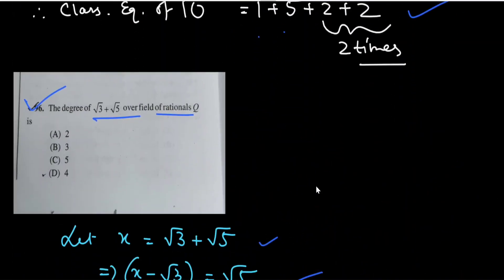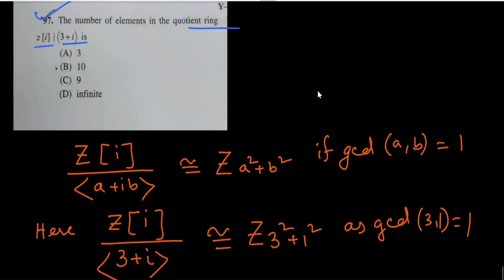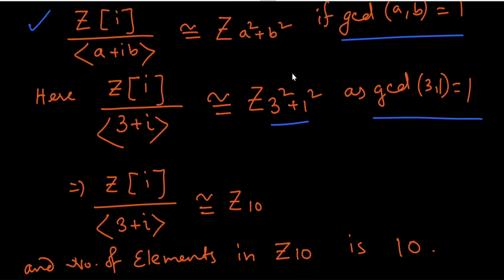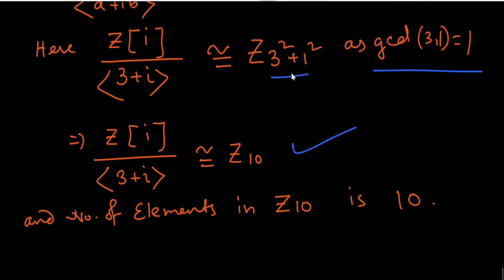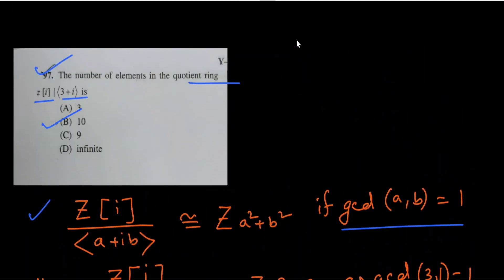Question 97 asks: what is the number of elements in the quotient ring Z[i]/⟨3 + i⟩? We use the concept that Z[i]/⟨a + bi⟩ is isomorphic to Z/(a² + b²)Z when gcd(a, b) = 1. Here Z[i]/⟨3 + i⟩ is isomorphic to Z/(3² + 1²)Z = Z/10Z, since gcd(3, 1) = 1. The number of elements in Z₁₀ is 10, so the number of elements in this quotient ring is 10. Option B is the correct answer.